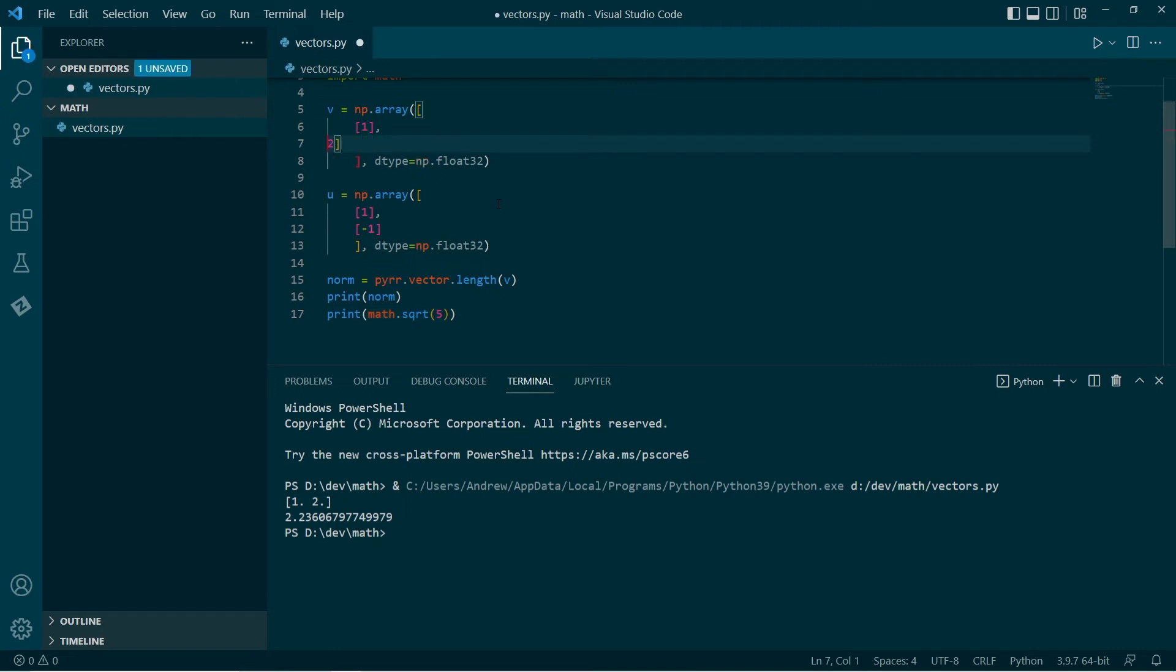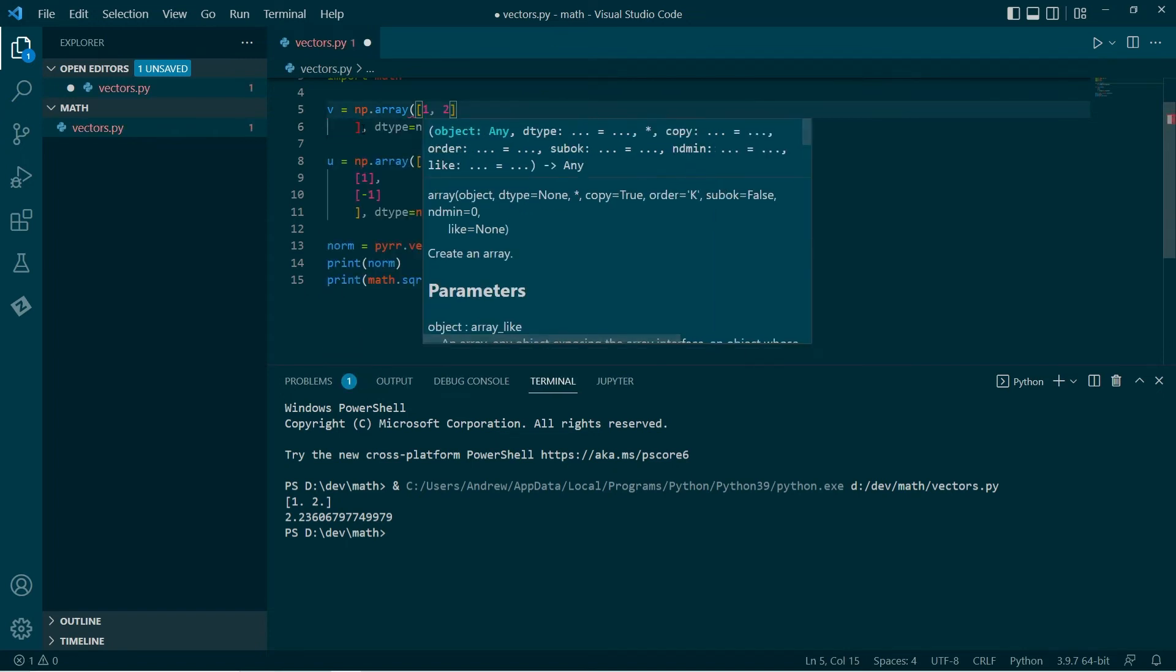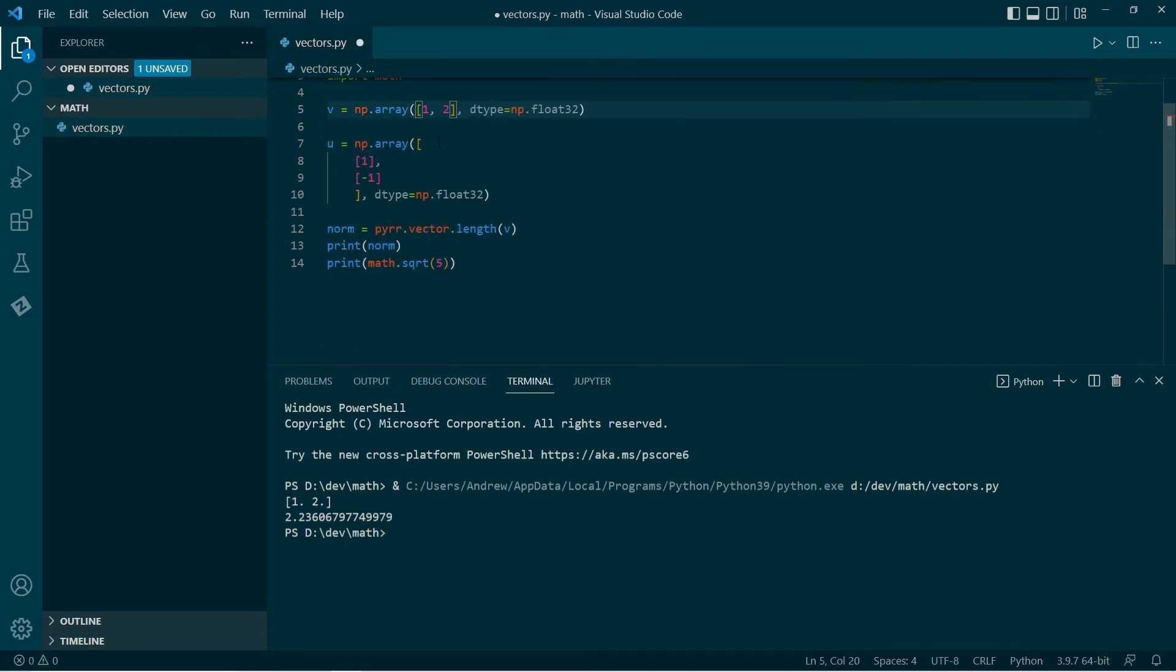I think pyre expects this to be a row vector, not a column vector. So in other words, horizontal. Let's try that again. There we go.